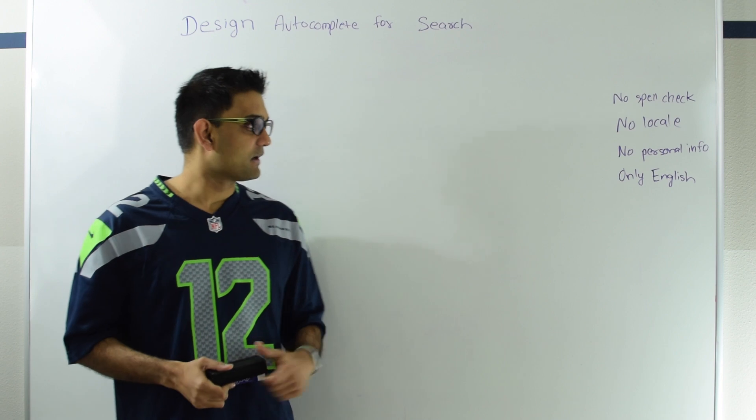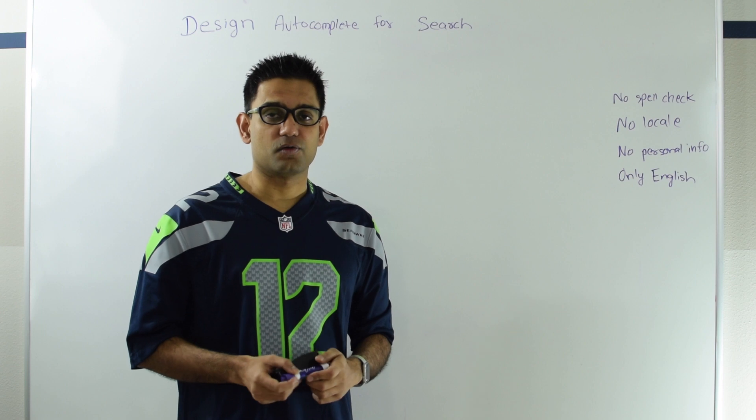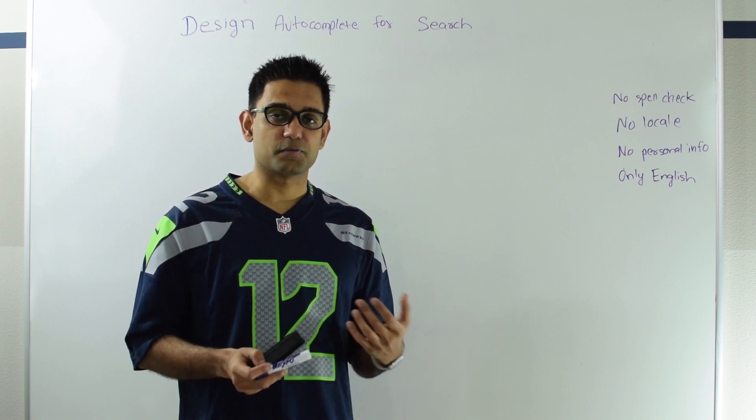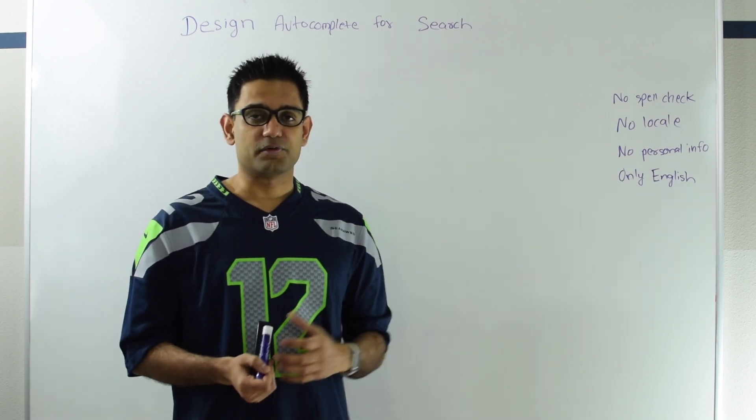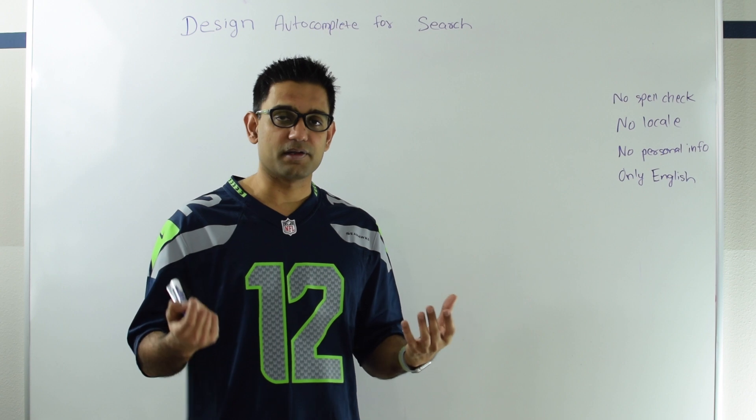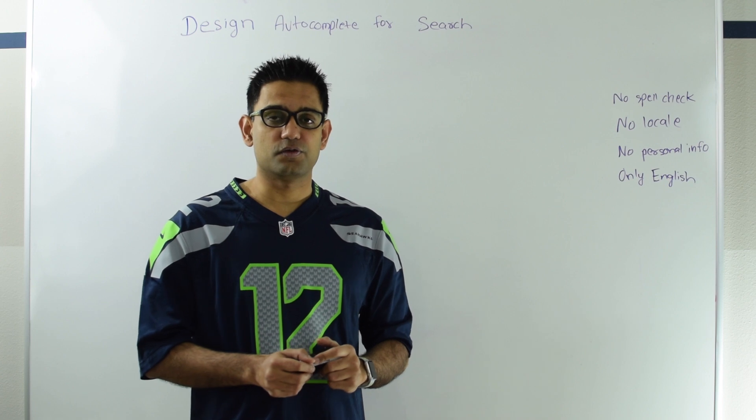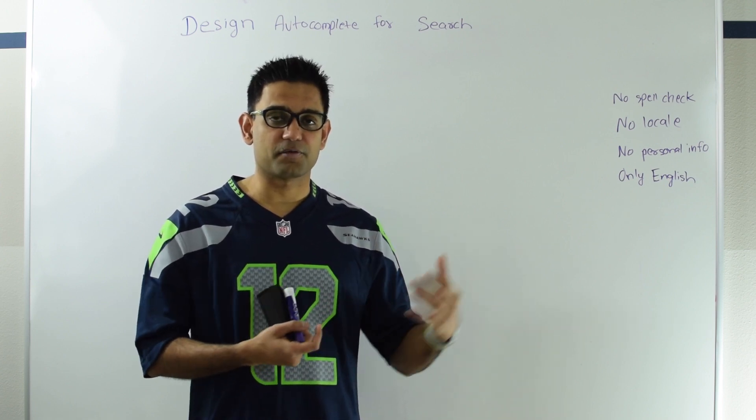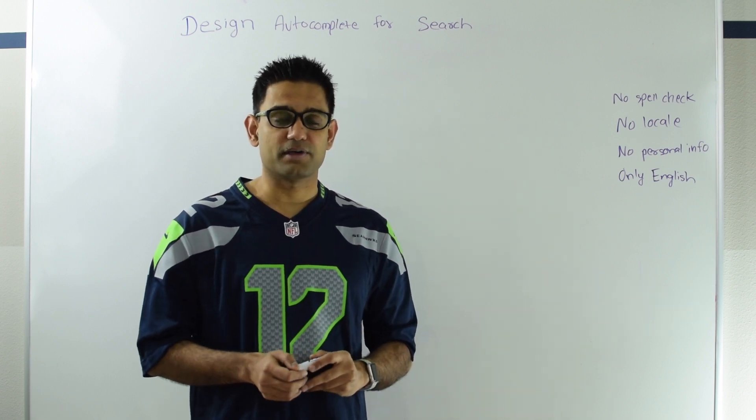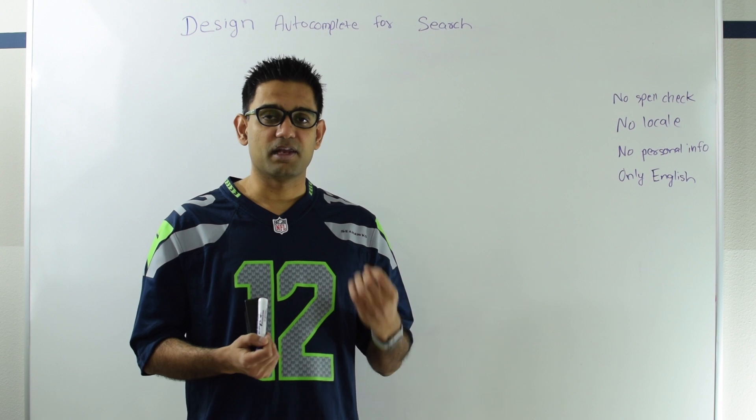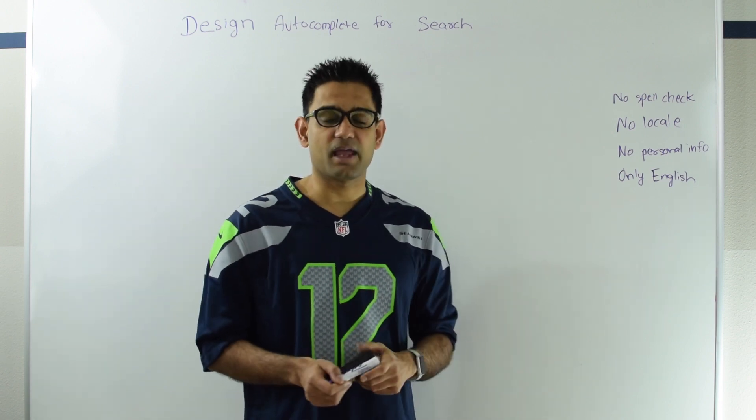Before going to autocomplete, let's talk about some things we are not going to cover in this video: No spell check, so we won't cover spelling correction as you type. No locale information, so a person searching in Seattle or London will get the same set of autocomplete results. No personal information, so we won't use your personal information to show in the autocomplete result. And we are only going to concentrate on the English language. Basically, we are developing a minimum viable product which hopefully is flexible enough such that these features can be added in the future.